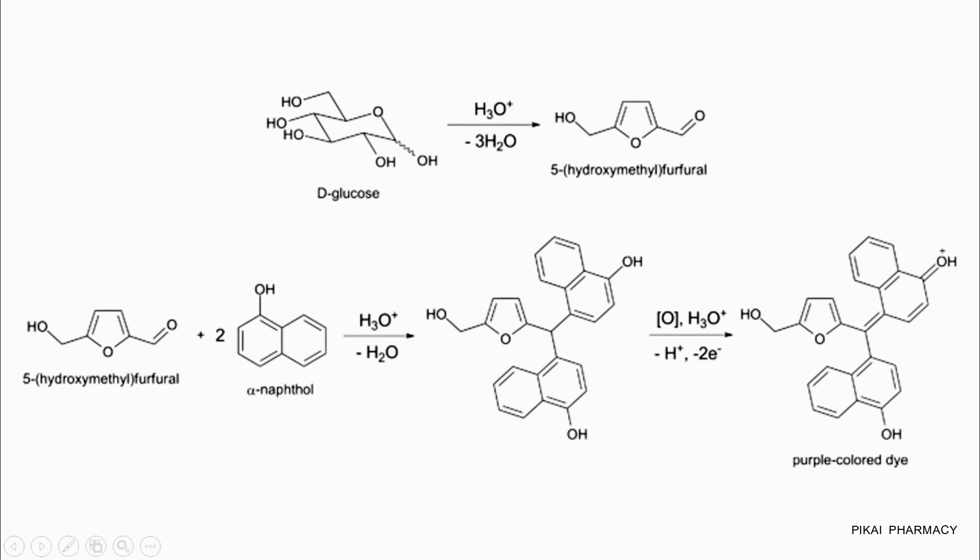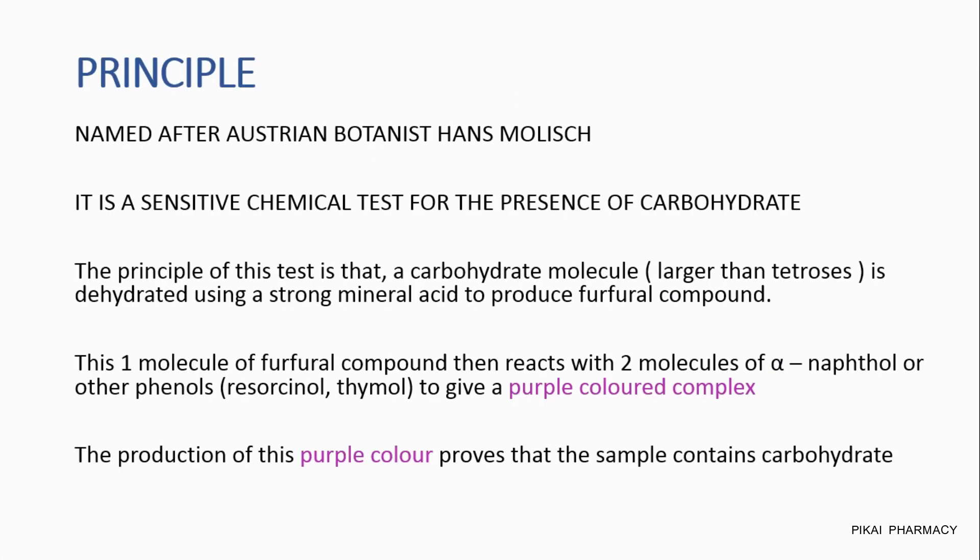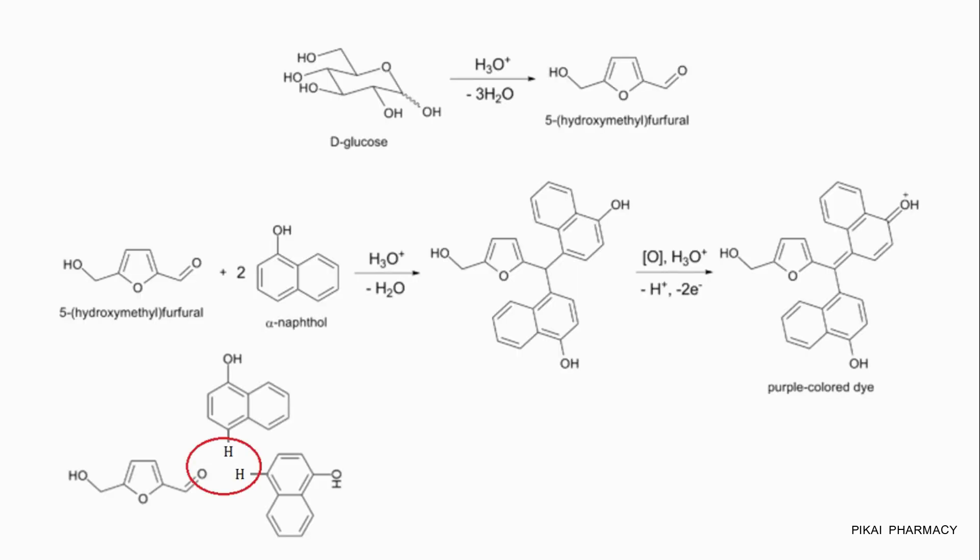Now, this 5-hydroxymethylfurfural reacts with two molecules of alpha-naphthol, or other phenols such as resorcinol or thymol, to give a purple-colored complex. The production of this purple color proves that the sample contains carbohydrate.